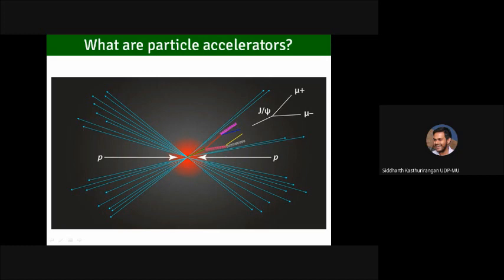I would not fully agree that speed is the primary criterion. The range of accelerators can go from energies of a few hundreds of electron volts all the way up to hundreds of giga-electron volts. Not all of these speeds are comparable to the speed of light — you also have non-relativistic particles in some applications. Speed is important but it is just one parameter.